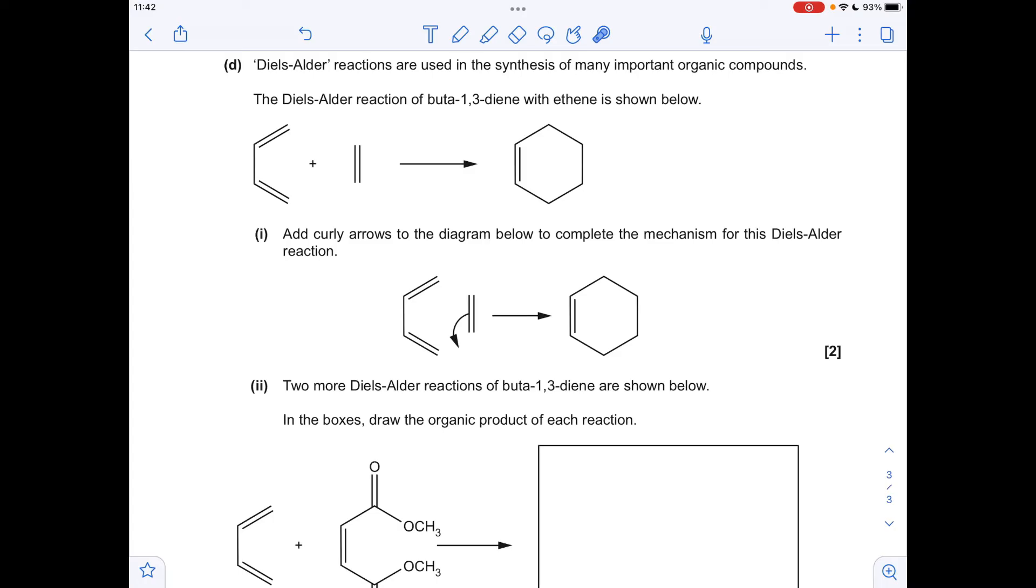So then what else must have happened? This double bond's gone now, it's gone up to there. So a pair of electrons must have jumped up to here. And then we've gone from a double bond here to a new bond there.